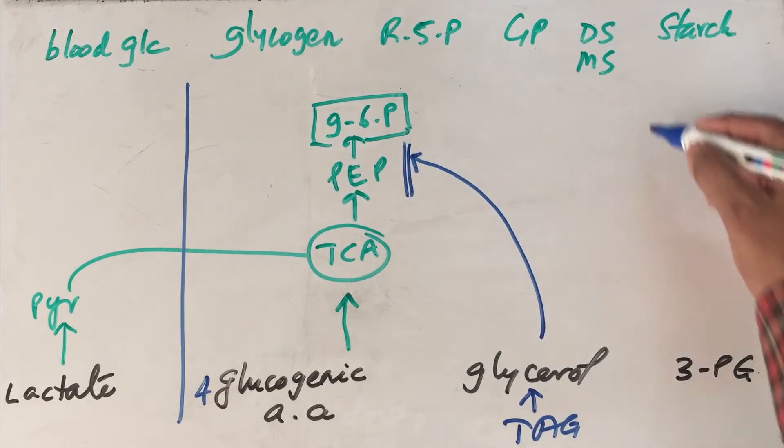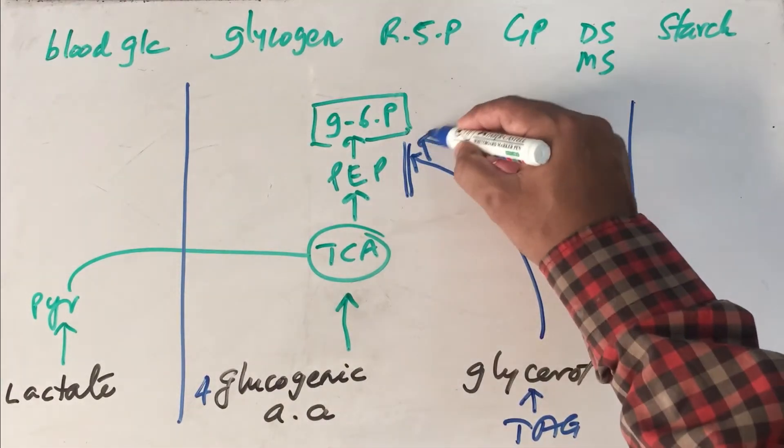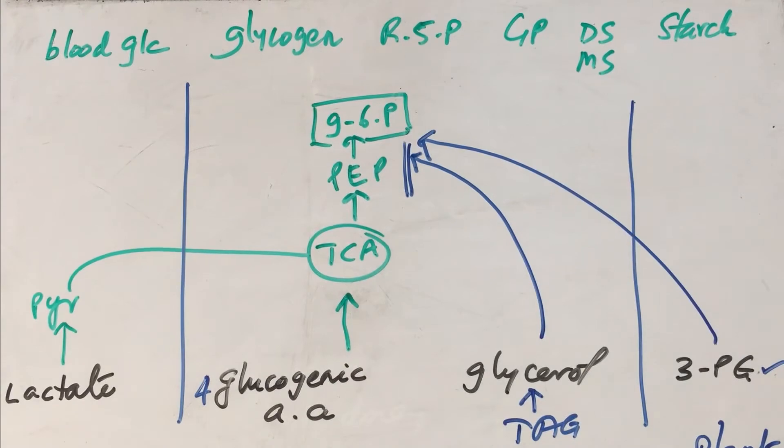Now look at the plant system. This is a plant system. In the plants, through carbon dioxide fixation, 3-phosphoglycerate will be formed. And the 3-phosphoglycerate also can be converted to glucose 6-phosphate.